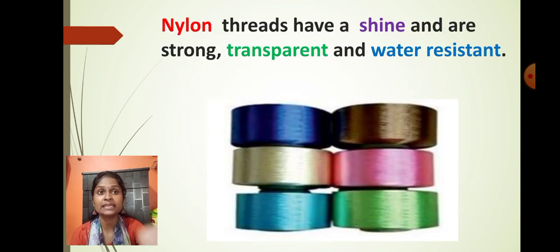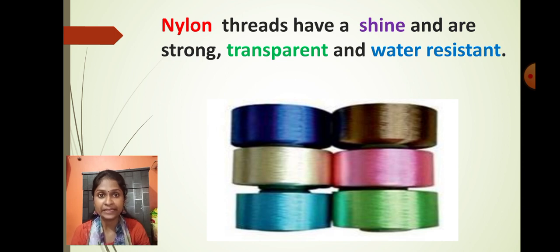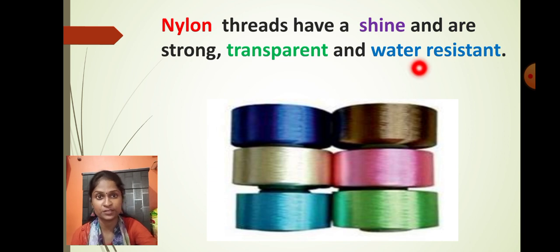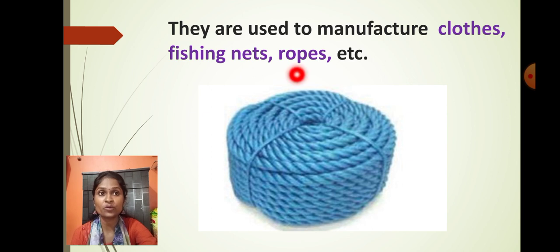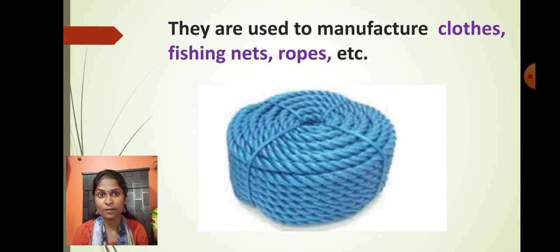Nylon threads have a shine, and they are very strong, transparent, and water resistant. Because they are water resistant, our umbrellas and raincoats are mostly made of nylon thread, giving us protection from water. Nylon threads can be used for clothing purposes, for fishing nets, and even for rope — these types of rope and fishing nets you must have seen at home.